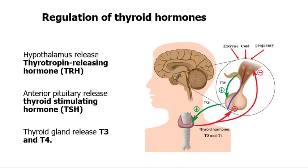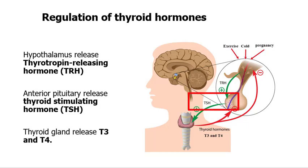Thyroid hormone regulation starts from a peptide hormone secreted from the hypothalamus called thyrotropin-releasing hormone, or TRH. TRH travels through the portal system to the anterior pituitary gland, which stimulates it to release another hormone called thyroid-stimulating hormone, or TSH. TSH receptors are located within the thyroid gland and stimulate the release of thyroid hormones — T3, also called triiodothyronine, and T4, or thyroxine.